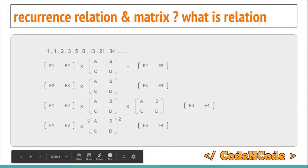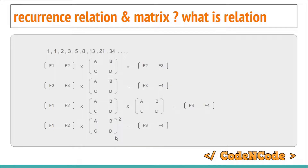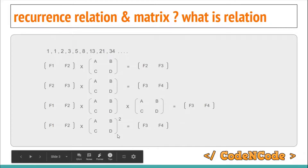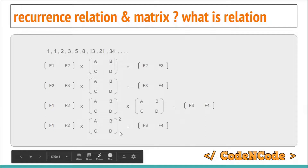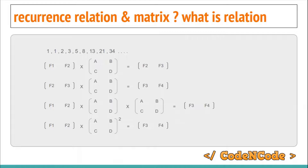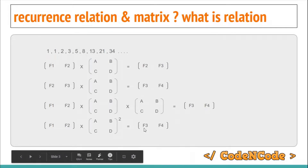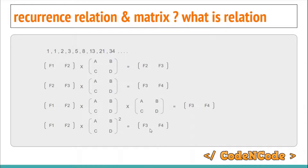The complexity of calculating a matrix raised to power n is dimension-cubed multiplied by log n, as we have already seen in the previous matrix exponentiation lecture. The dimension of this matrix is 2, so it would be 2³ × log n = 8 log n, which is asymptotically log n. So in log n time, we are able to calculate the nth element of a recurrence relation.